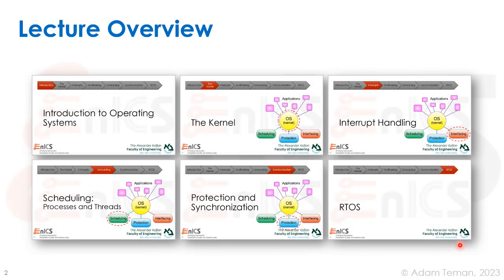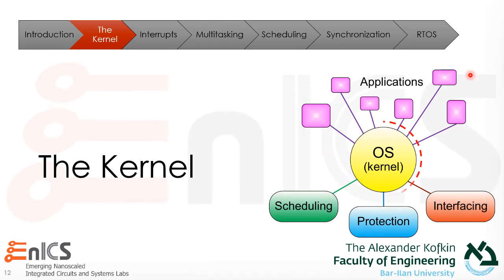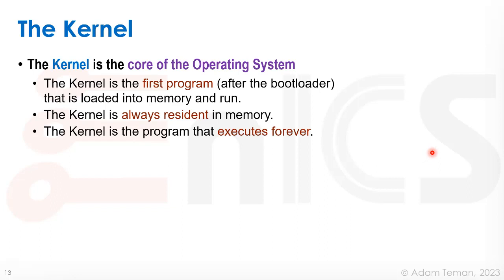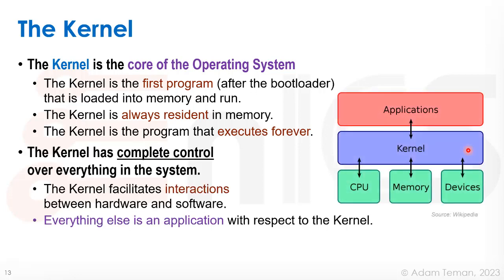Now knowing what an operating system basically is, let's move into the central piece of the operating system: the kernel. The kernel is the core of the operating system. It's the first program after the bootloader that is loaded into memory and run. It's always resident in memory and it's the program that basically executes forever. The kernel has complete control over everything in the system. We have the kernel, the applications, and the different types of hardware — the CPU, memory, devices, etc. It facilitates interactions between the hardware and the software, and everything else in the system is basically an application with respect to the kernel.